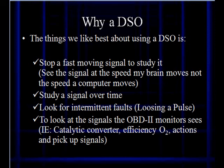We want to stop fast-moving signals to study it. As Doc Nall says, he wants to see the signal at the speed his brain moves, not at the speed the computer moves. And that's a very accurate statement. We need to study the signal over time. One of the most important is we're looking for intermittents. Are we losing pulses? We've solved some really difficult problems because we slowed the pulse down, looked at the whole pulse train, and said, oh, there's pulses that are dropping out on occasion. We want to look at the signals the OBD-II monitor sees to do things like catalytic converter efficiency and O2 actions and the magnetic pickup signals. These are the signals we can study, look at the same things computer does, and it's important to us to do that.